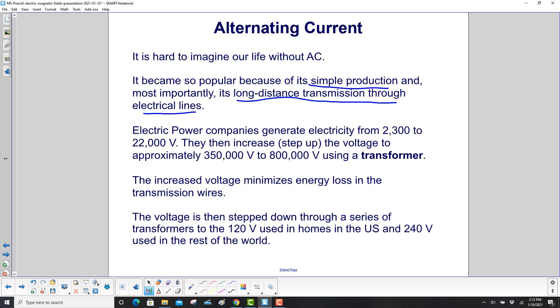Electric power companies generate electricity from 2,300 to 22,000 volts. They then increase or step up the voltage to approximately 350,000 to 800,000 volts using something called a transformer.